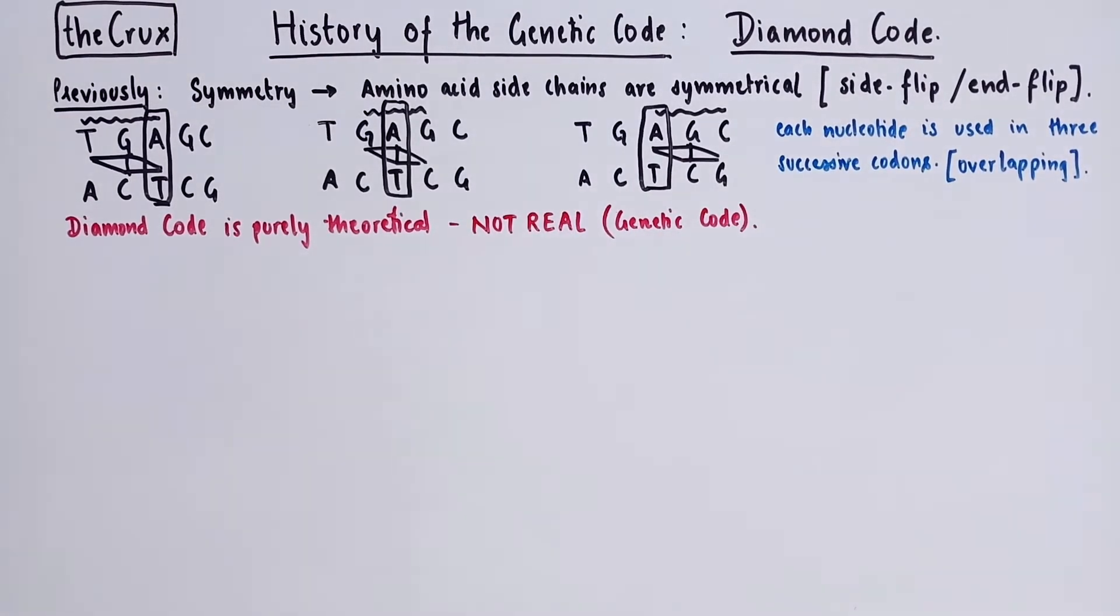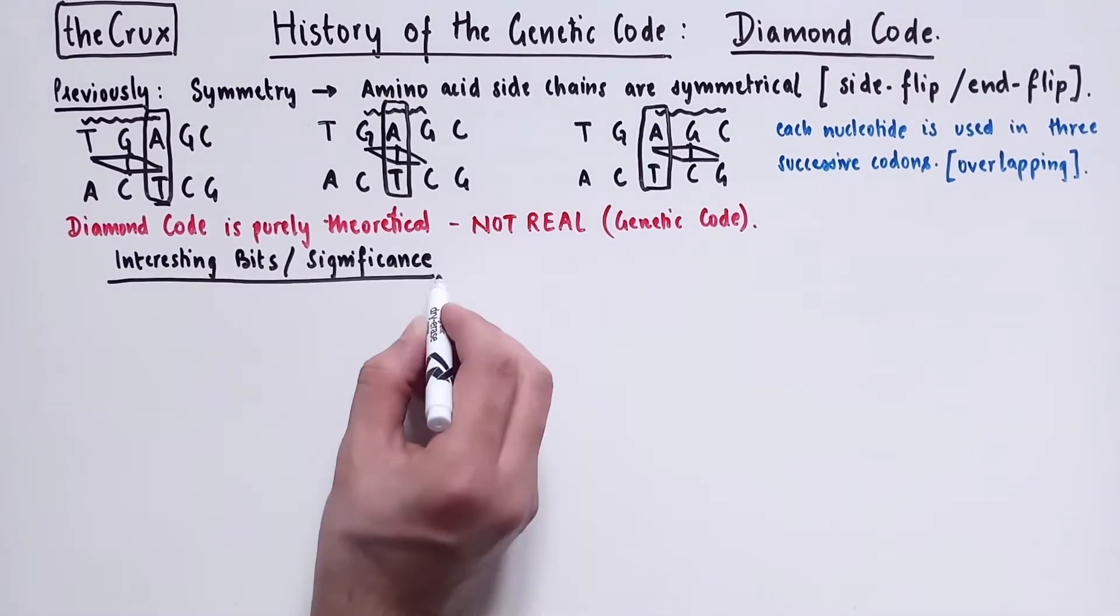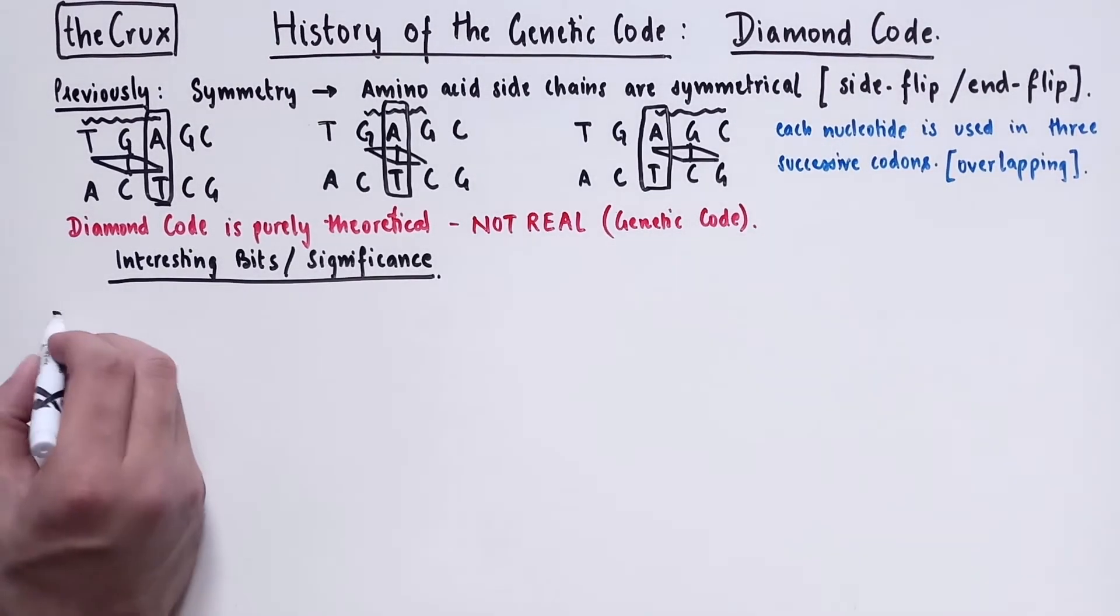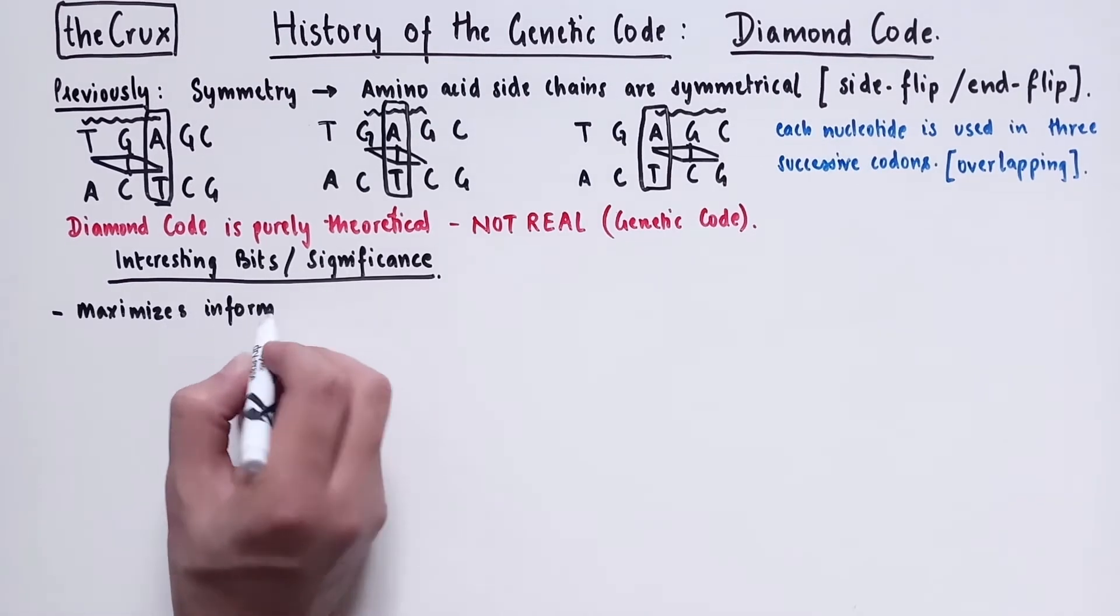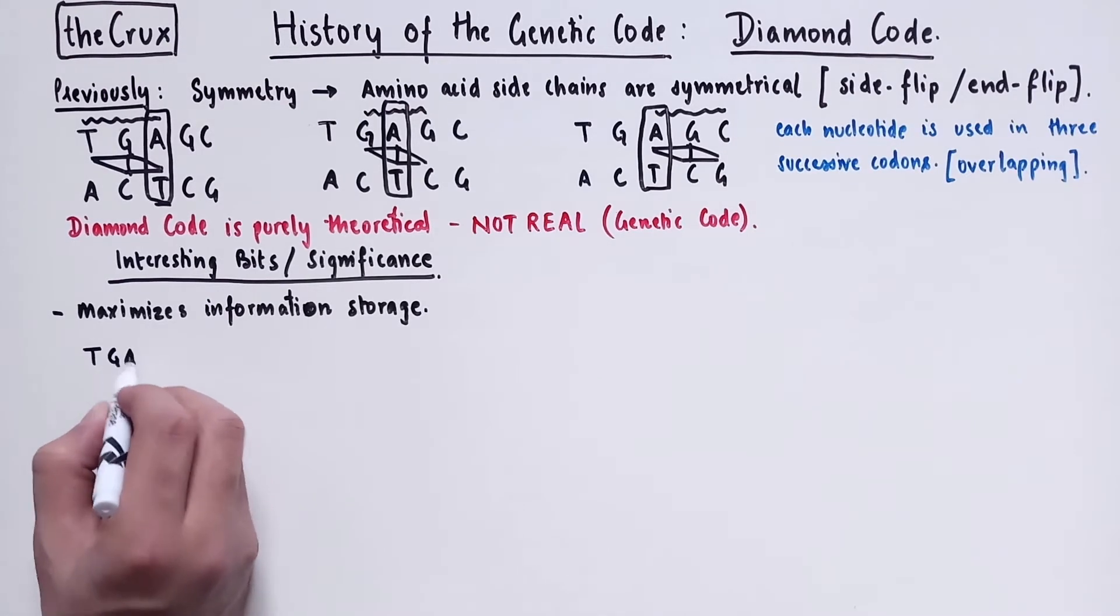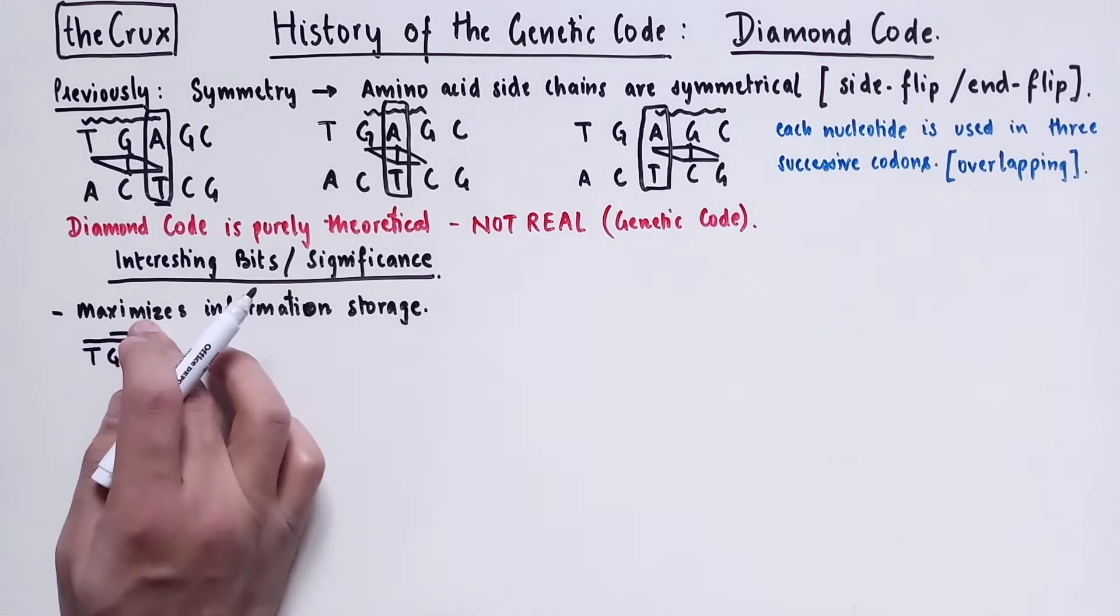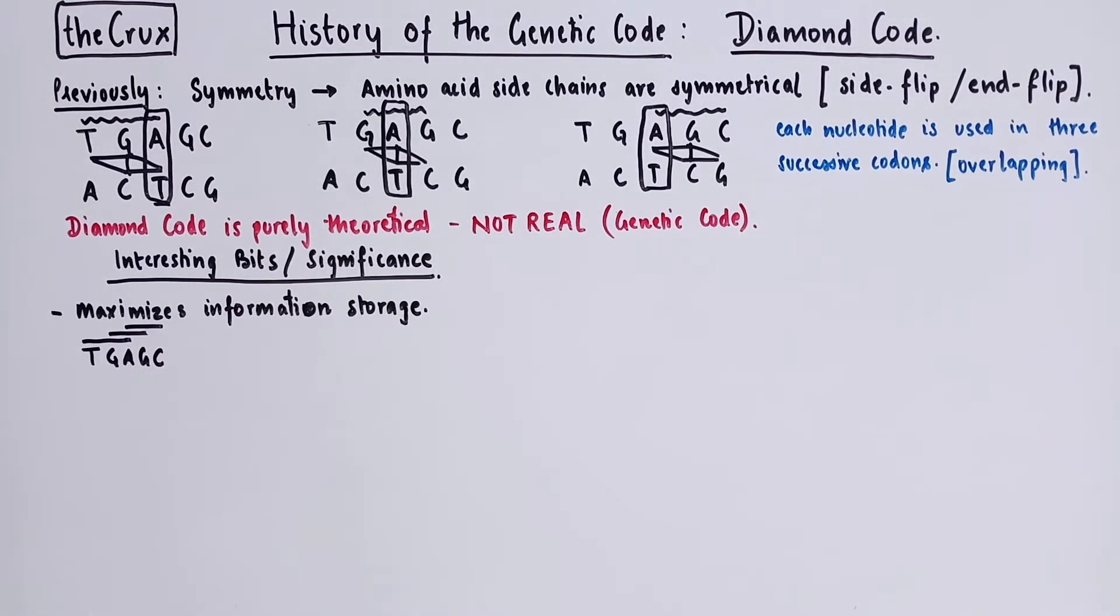But we can nonetheless learn about the interesting bits or significances of the diamond code. The first obvious one is that the diamond code maximizes the information storage capacity, because diamond code is an overlapping code. So let's see why it's an efficient way of storing information. Take for instance this DNA strand. So according to the diamond code, this DNA contains three codons, TGA, GAG and AGC. So it results in three amino acids.